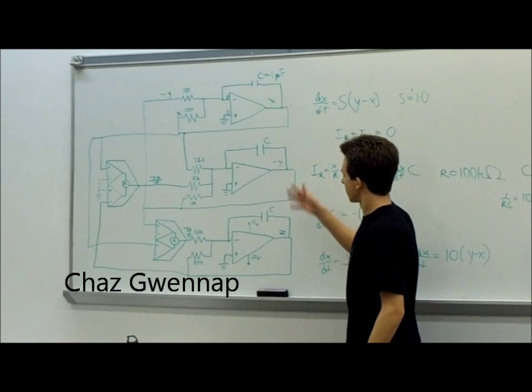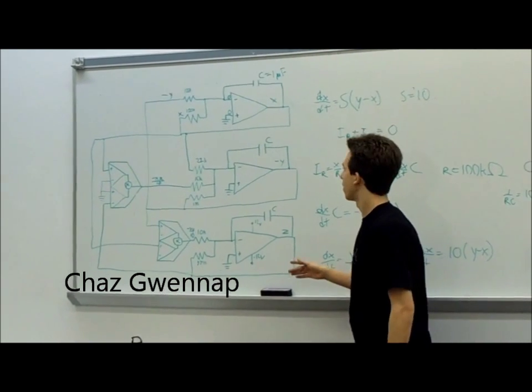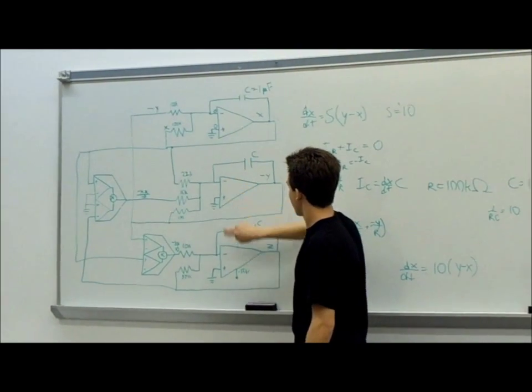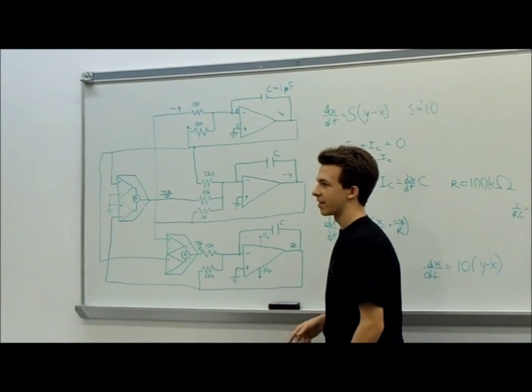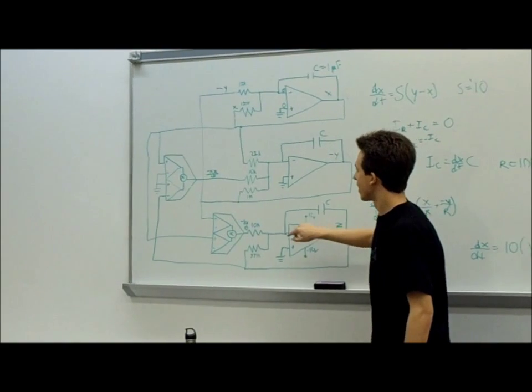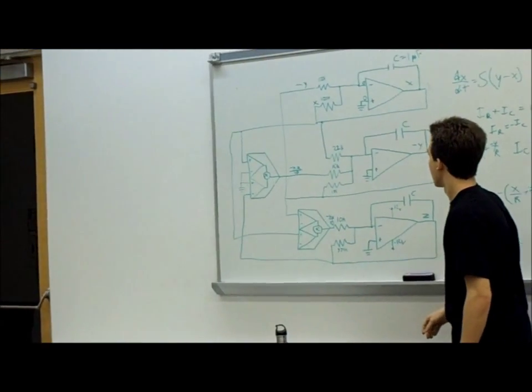All right. So this is the circuit diagram of the circuit we use to solve the Lorentz system of equations. There's two main parts of this circuit, which are the op amps, which integrate the three differential equations for x, negative y, and z. And then the analog multipliers, which multiply the nonlinear aspects of the Lorentz system.